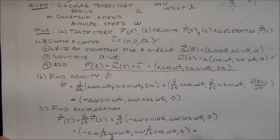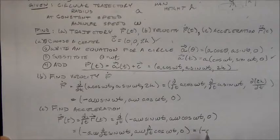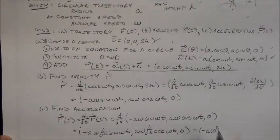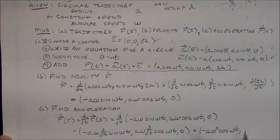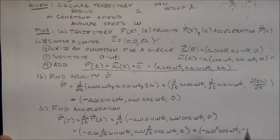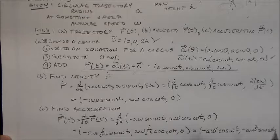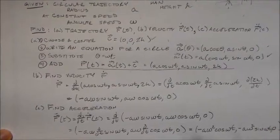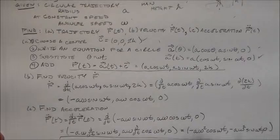So we have minus a omega d dt sine omega t, and we have a omega d dt cosine omega t, and a d dt of zero, which is just zero. And that's all going to, so we're going to have omega cosine t from this guy. So we have minus a omega squared cosine omega t, and we have minus a omega squared sine omega t, and a zero at the end, which you can't see. There's a zero right there. All right, so that's our acceleration.